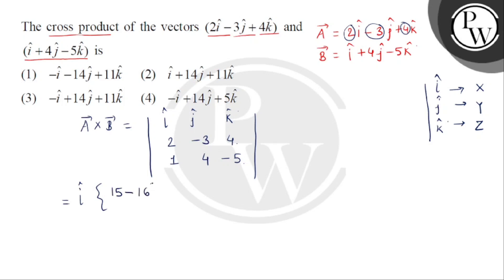Then हम लेंगे minus j cap. अब j की row और j का column छोड़ देंगे, तो यह दोनों का product मिलेगा हमें minus 10, minus, right to left product मिल जाएगा 4.